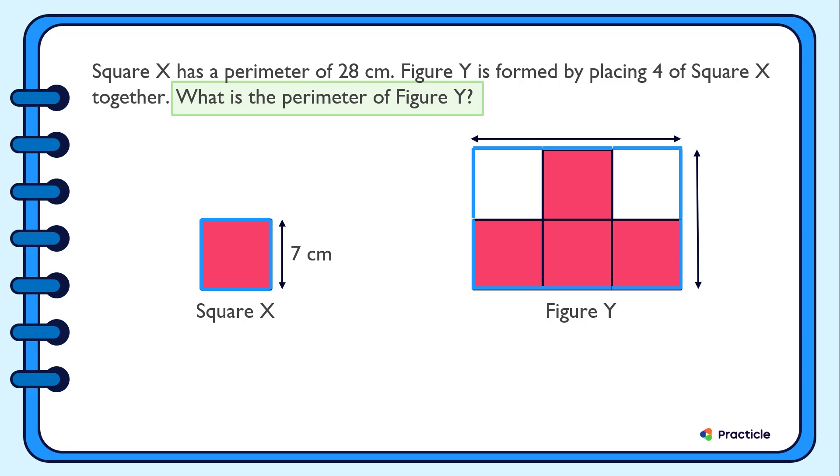Let's see. The length of this rectangle is 7 plus 7 plus 7, which is 21 cm.